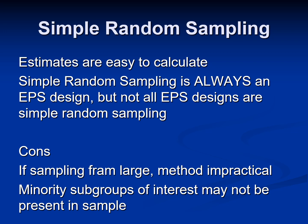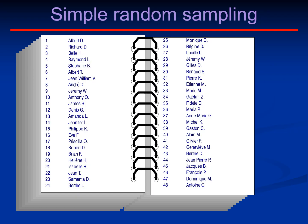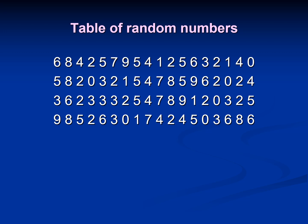Disadvantages of simple random sampling: if the sampling frame is too large, the method is impractical, and minority subgroups of interest may not be present in the sample. Regarding replacement of selected units, it may be without replacement, where no element can be selected more than once, or with replacement, where an element may appear multiple times in the sample. For example, in a given population, number 20 is chosen, then number 40, then number 29 — there is no certain order in which samples are taken.